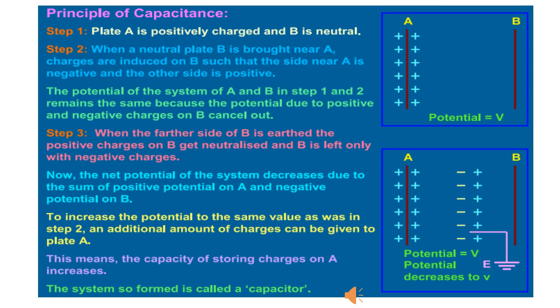Due to electrostatic induction, the closer phase of plate B acquires negative charge and its further phase acquires positive charge. The negative charge on plate B tends to reduce the potential on plate A while the positive charge on plate B tends to increase the potential on plate A. As the negative charge of plate B is closer to plate A than its positive charge, the net effect is that the potential of A decreases by a small amount, and hence its capacitance increases by a small amount.